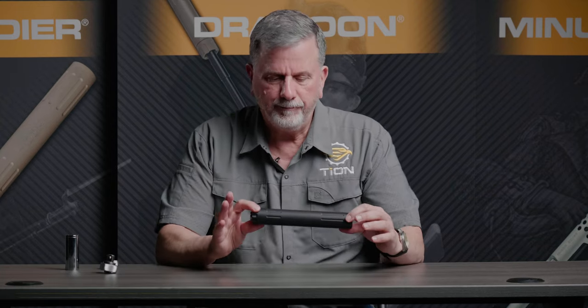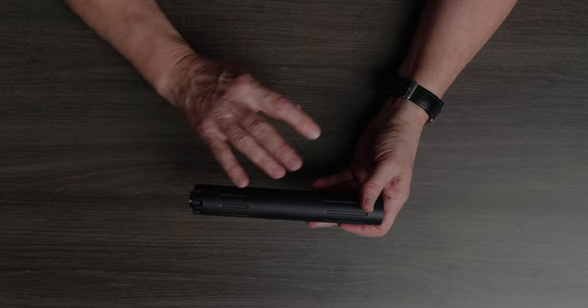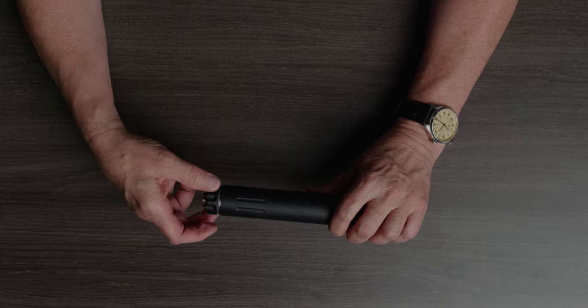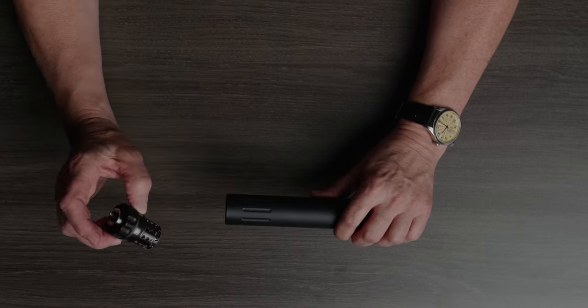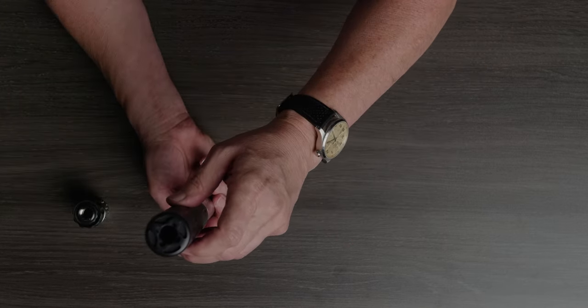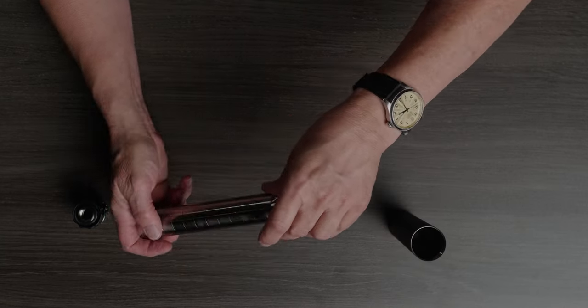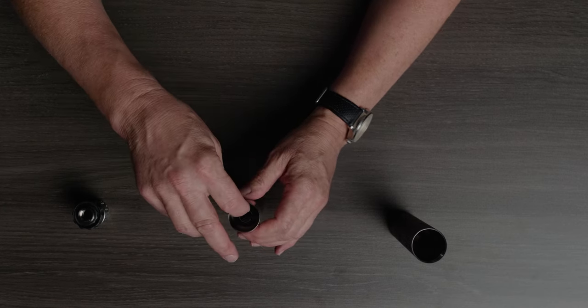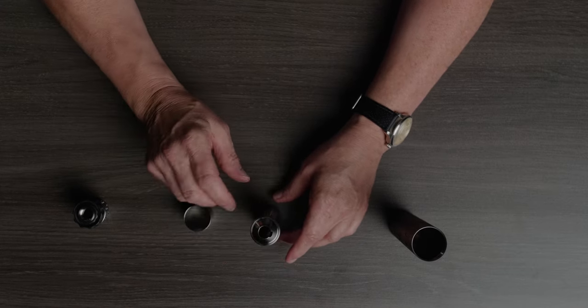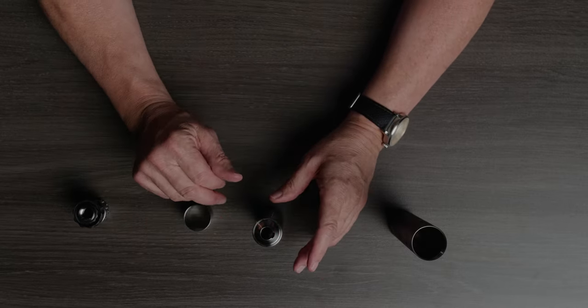This is a Grenadier 45 and I'm going to go through total breakdown technology so you can see how all the parts come apart. I'm going to start by taking the Nielsen device out. Now the Nielsen device encompasses four parts and we'll get back to that. Now the Grenadier suppressors have different numbers of baffles depending on which one you're looking at, but all of them have a first baffle and a last baffle that are unique. All of the center baffles are interchangeable. You can move them in whatever sequence you want.